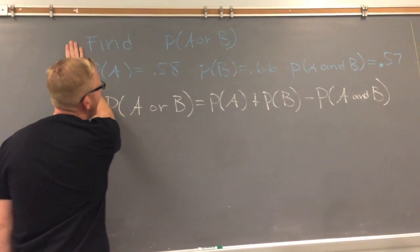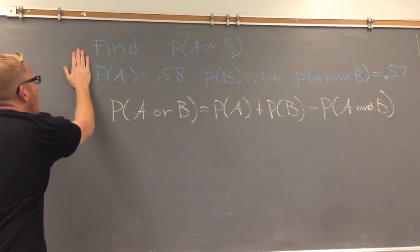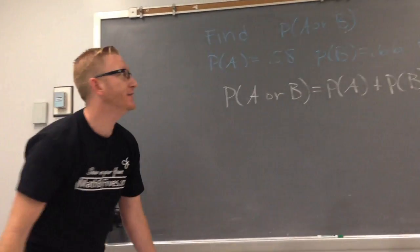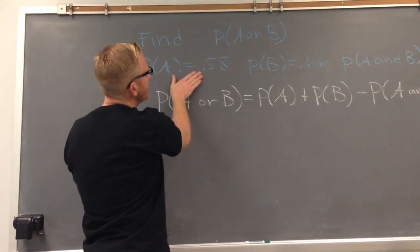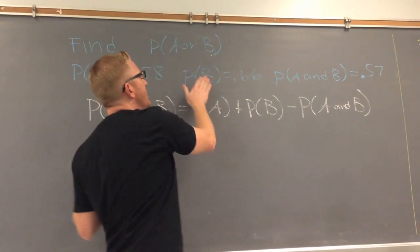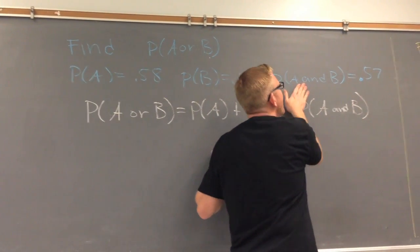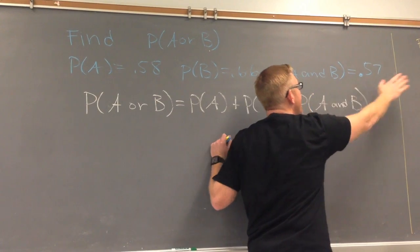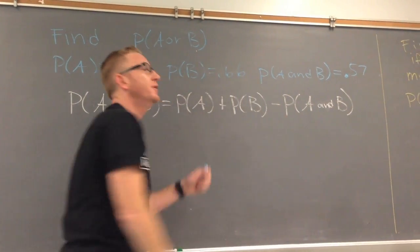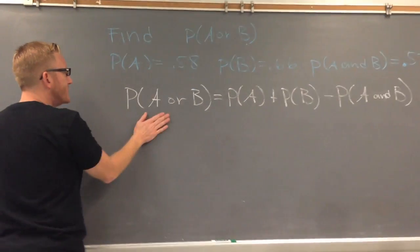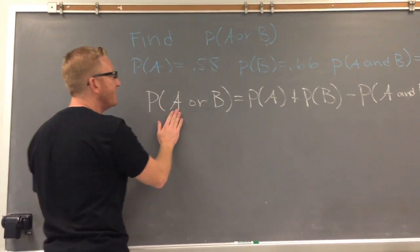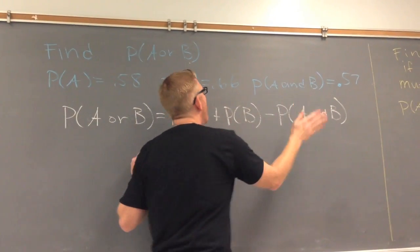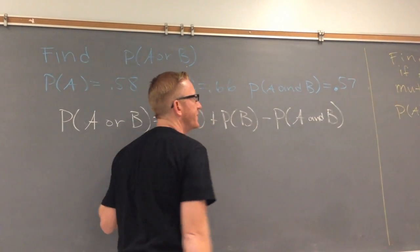We want to find the probability of A or B. They give us a couple of probabilities — the probability of A is 0.58, the probability of B is 0.66, and the probability of A and B is 0.57. We're going to use the addition rule: the probability of A or B equals the probability of A plus the probability of B, minus the intersection of those two.